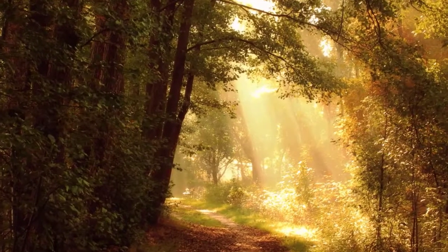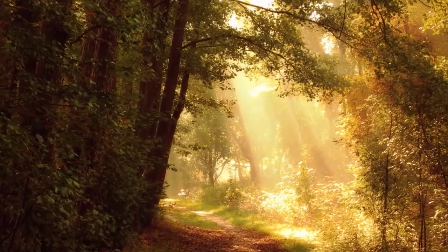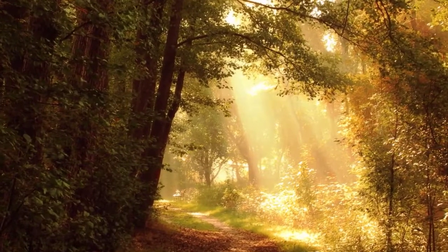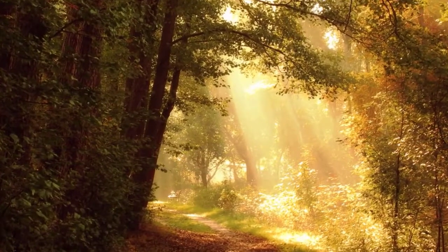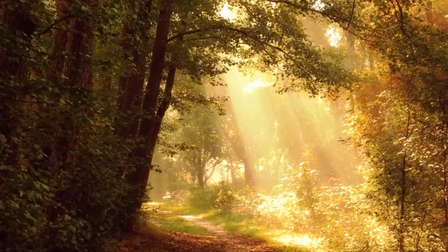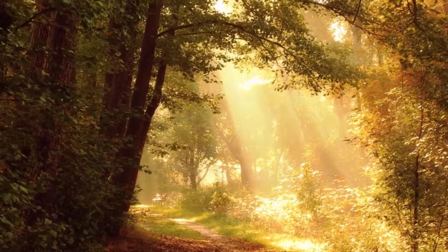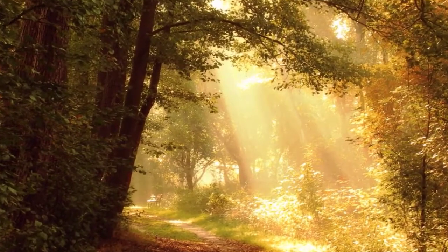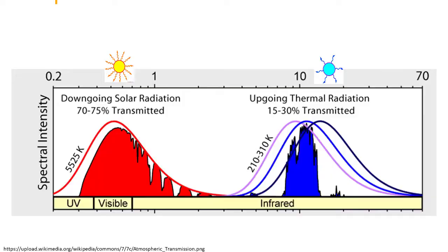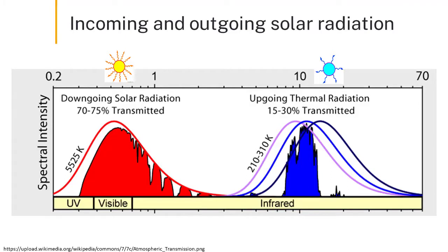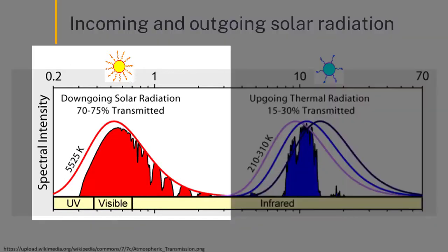The most important thing about our atmosphere is the relationship between the energy coming in from the sun and the energy that's being re-emitted from the earth. This graph shows very nicely that the sun's energy — electromagnetic radiation — is in the shorter wavelengths.